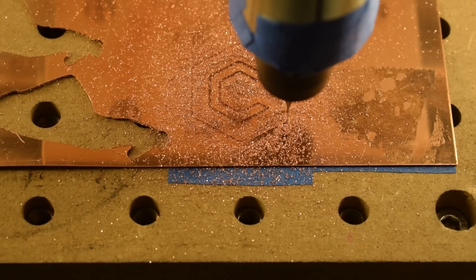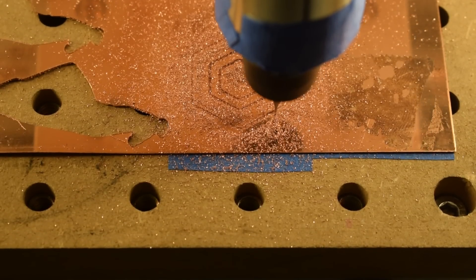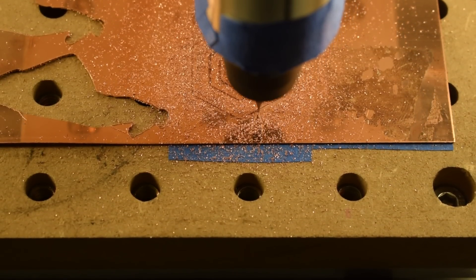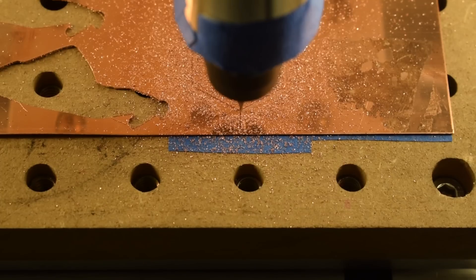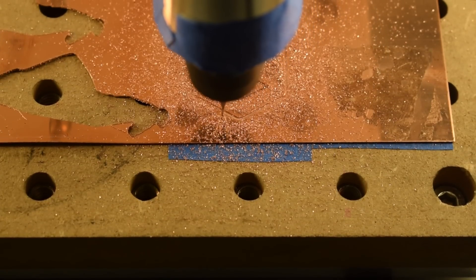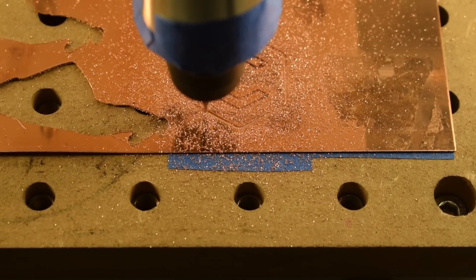Now while I let this run, I need to touch on temper. The softer a material is, the more poorly it will machine. Copper comes in a variety of tempers or hardnesses, and particularly in the jewelry world, softer material states are popular.